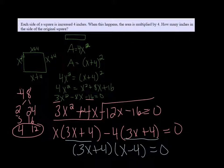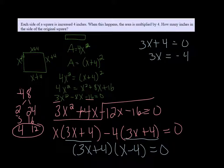And if you set each one of those equal to 0 and solve, I get 3X plus 4 equals 0. So subtracting 4, it's 3X equals negative 4, and dividing by 3, I get negative 4 thirds.